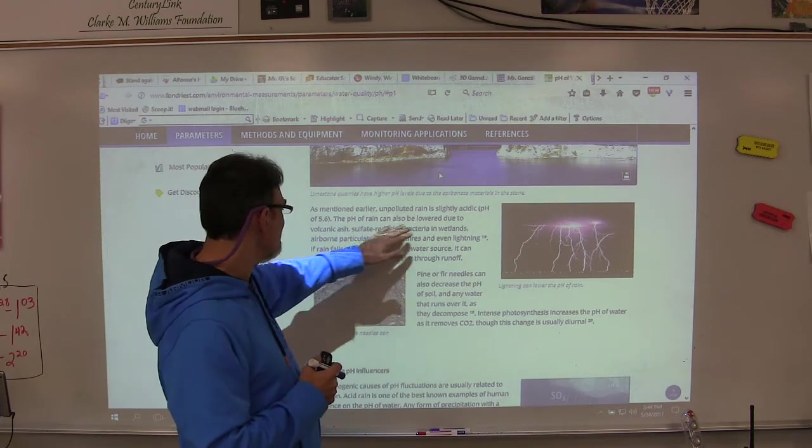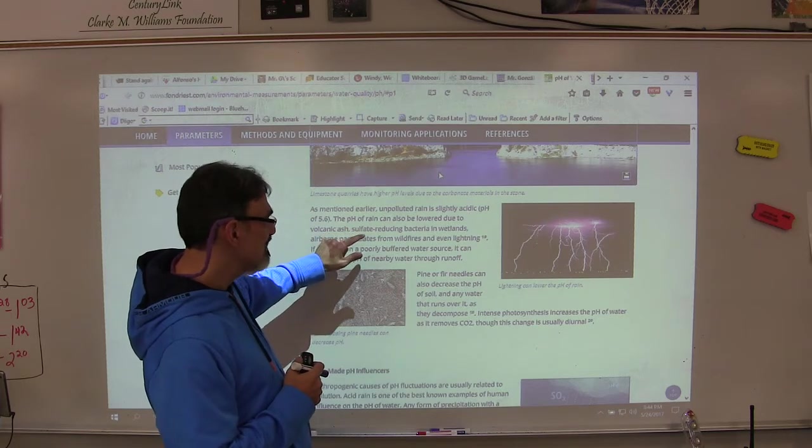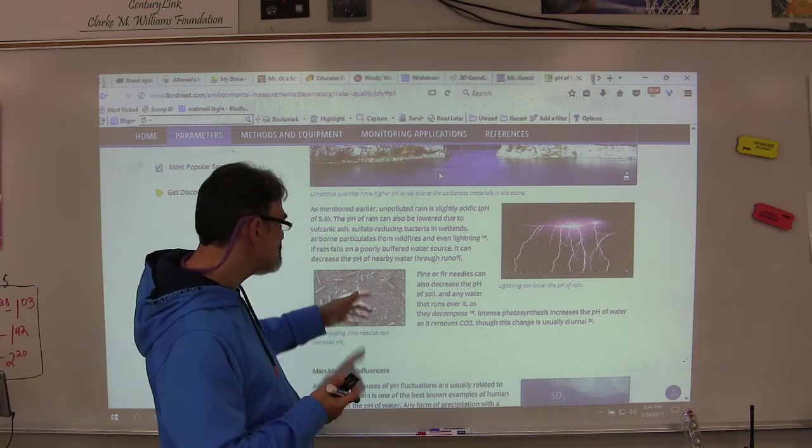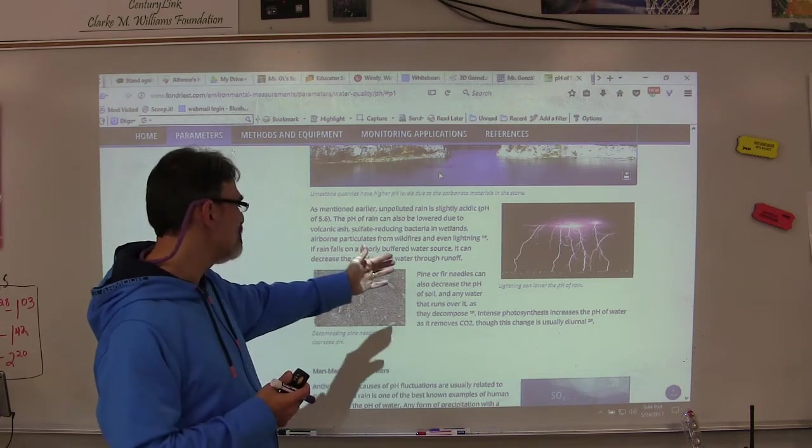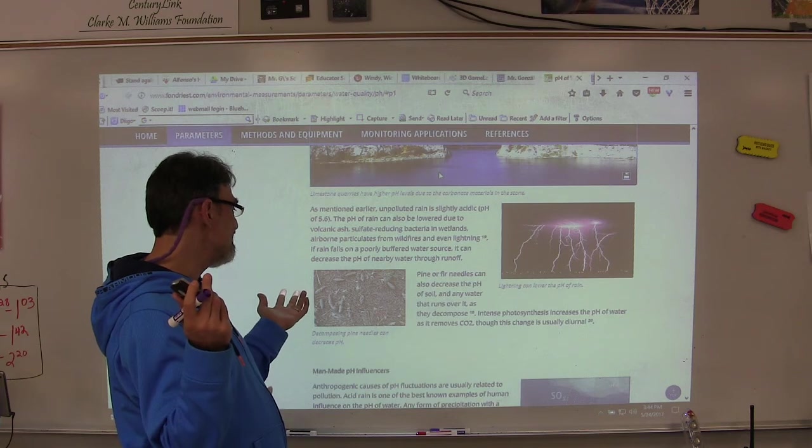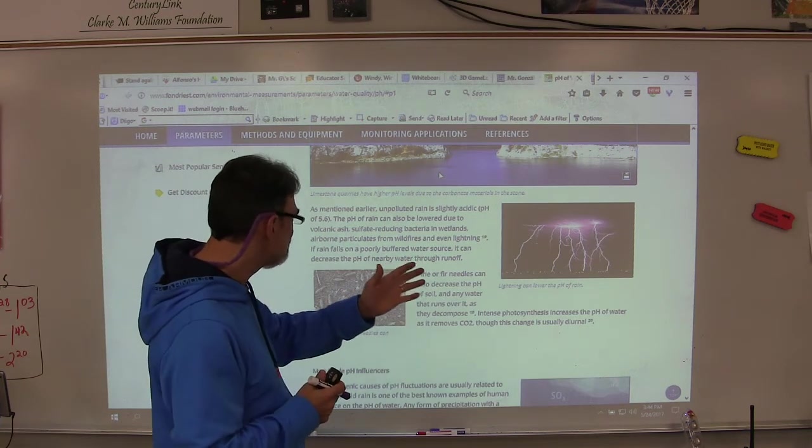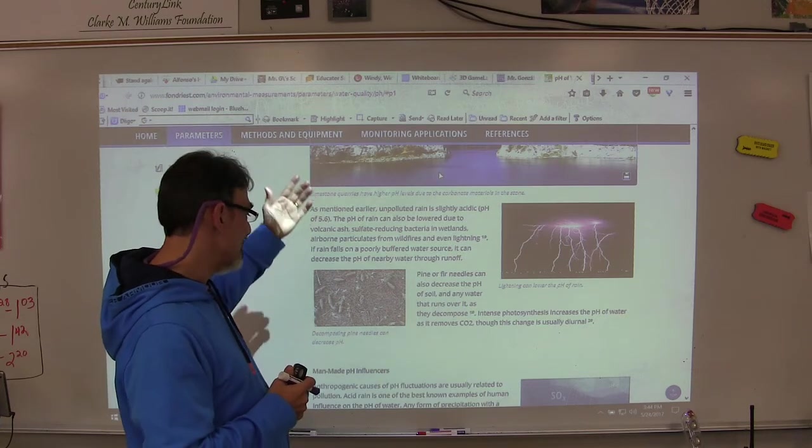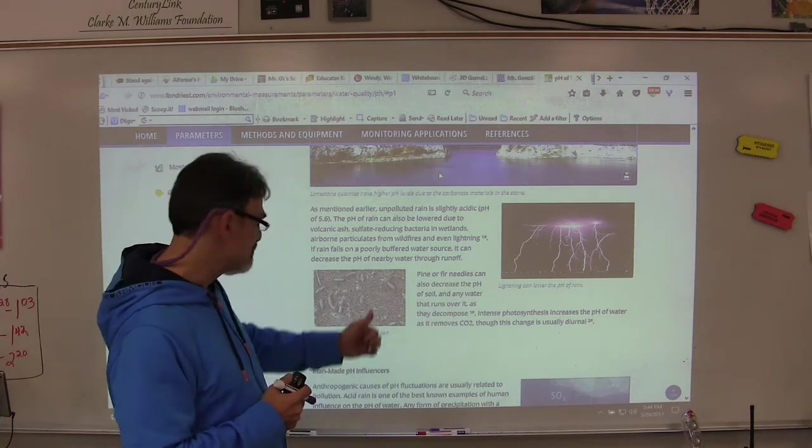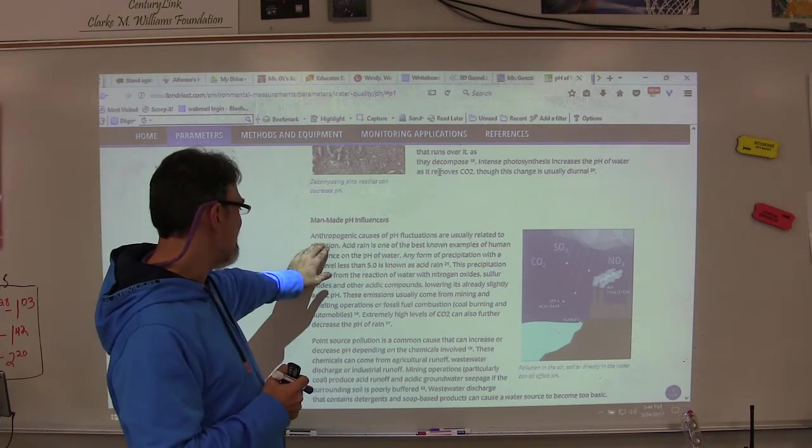Unpolluted rain is slightly acidic, pH of 5.6. The pH of rain can also be lowered due to volcanic ash, sulfate-reducing bacteria in wetlands, airborne particulates from wildfires, and lightning. So this can increase the acidity and make more acid rain.